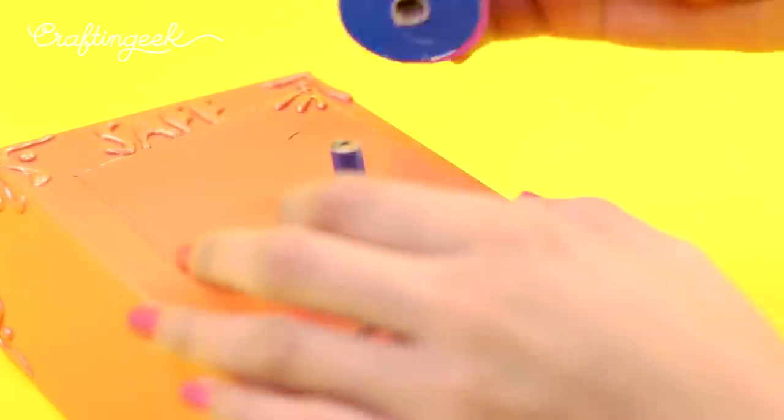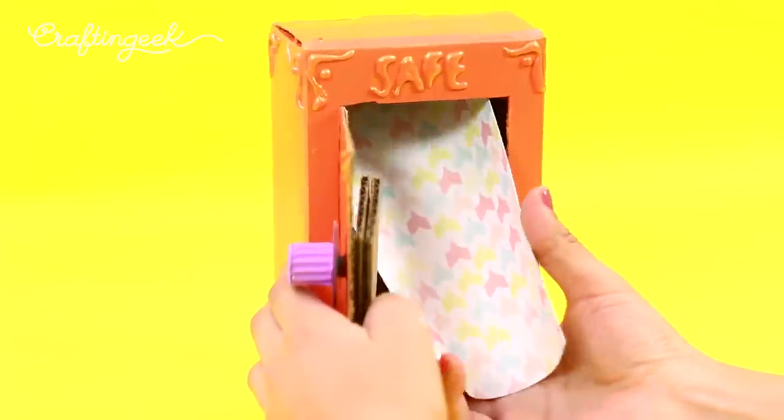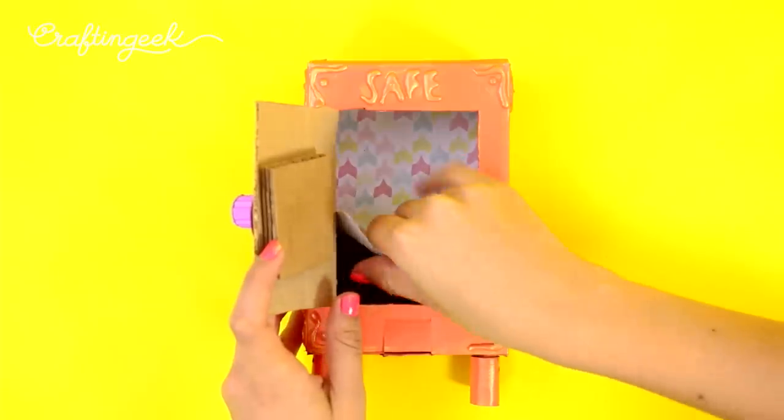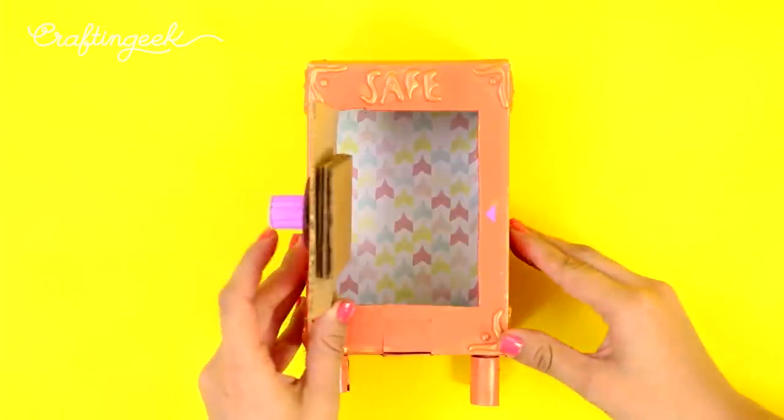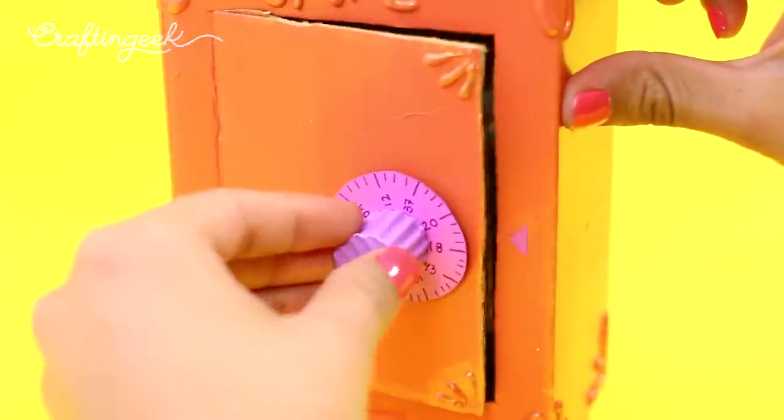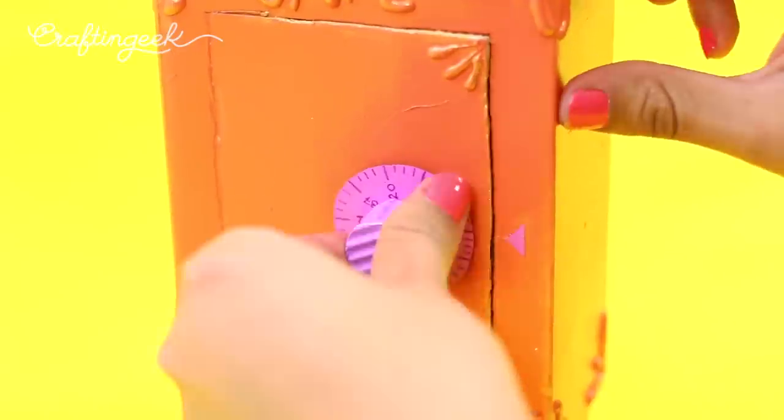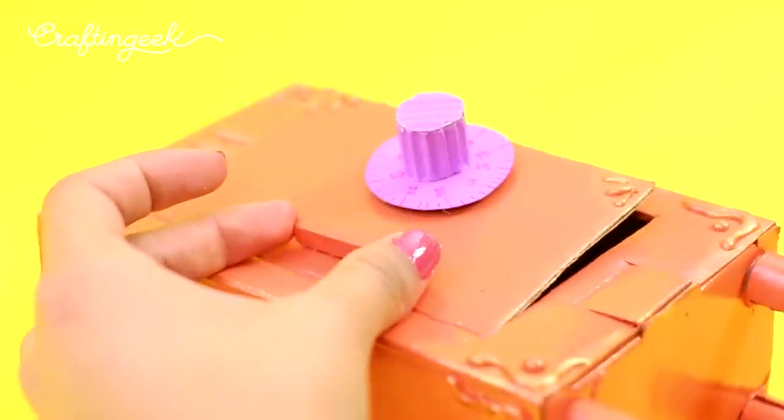For the inside we're going to add colored decorated paper and that's it. The box should be able to work. It should open on number 18 and not open on the rest of the numbers. If you find it difficult to open the box I recommend you to make something to pull on using wooden sticks.